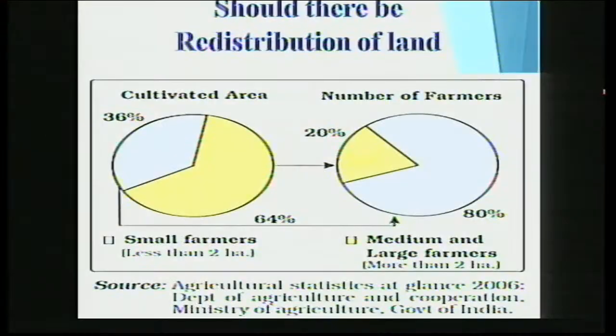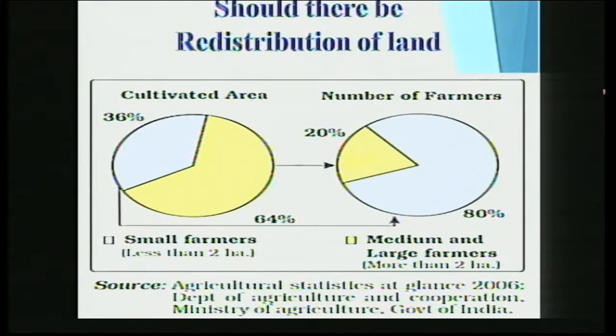Amartya Sen said productivity from a small plot of land is more than from a large plot, and he proved it too. In a small plot, the farmer and his whole family give their best, so output improves. In large farms there are economies of scale, but family members don't take much interest. There are large landholders who own large cultivated areas but have not made much investment to improve productivity.